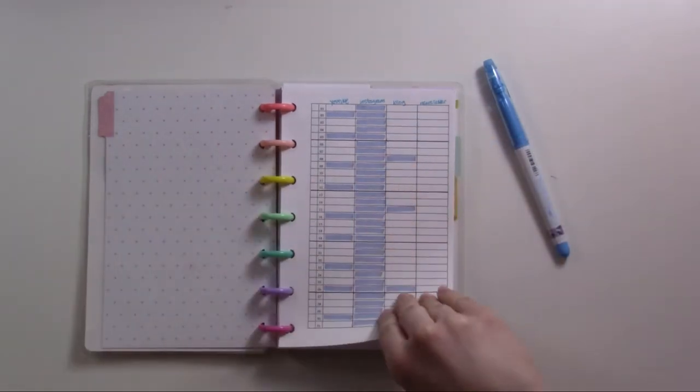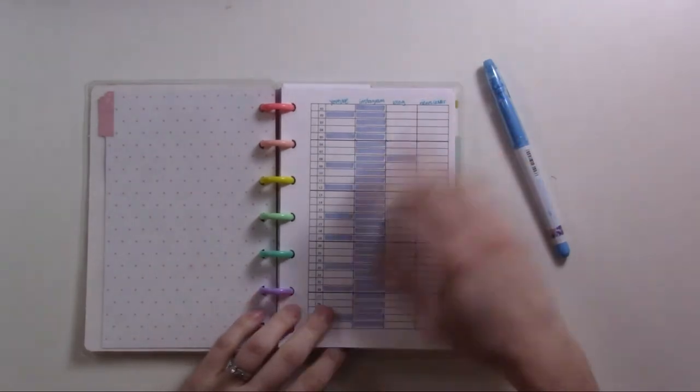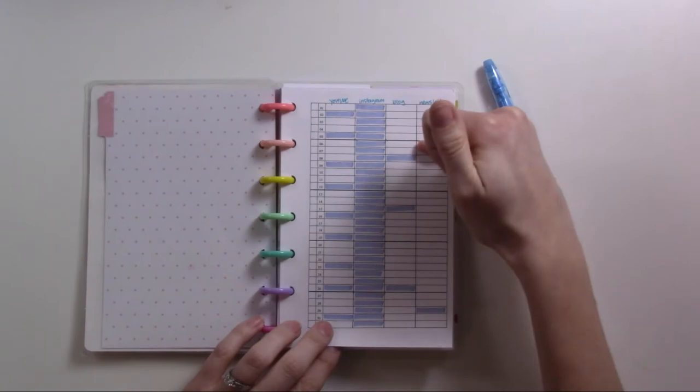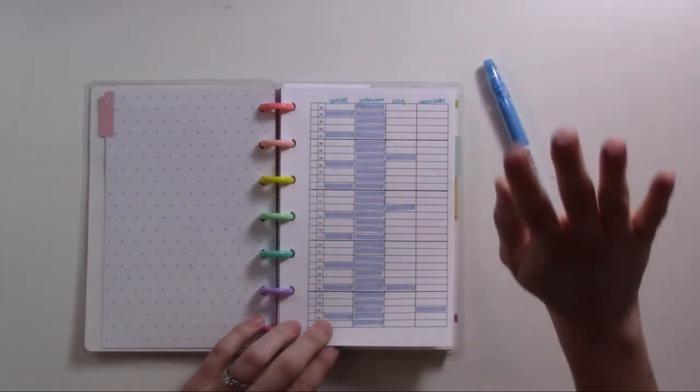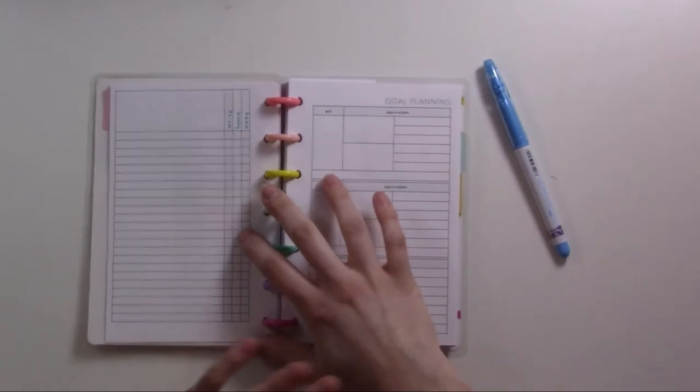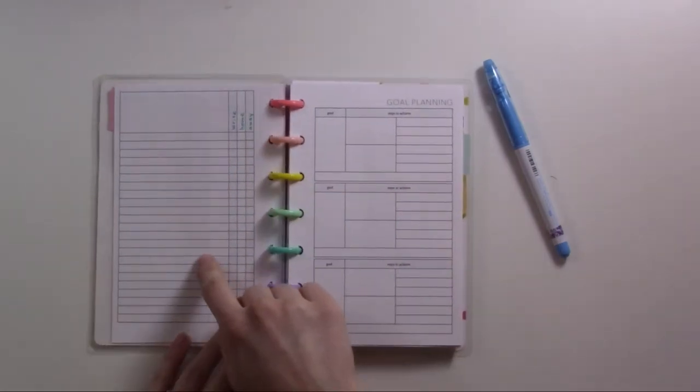This is the schedule for the month of January of when videos. I haven't actually put headers here, I'll do that now. This is YouTube videos, Instagram posts, blog posts, and my newsletter. I just put a check once it's scheduled and ready to go.